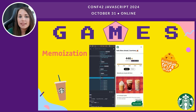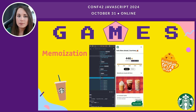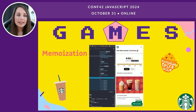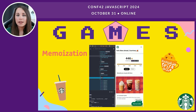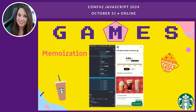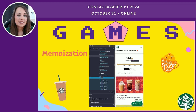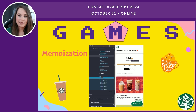For M — memoization — Starbucks optimizes its application performance using React's Memo and useMemo. These techniques are useful for caching data that doesn't change very often, such as currency formats or menu item prices. By preventing redundant re-renders, Starbucks enhances the responsiveness of its app and ensures users experience quick and smooth interactions, even during high-demand periods.